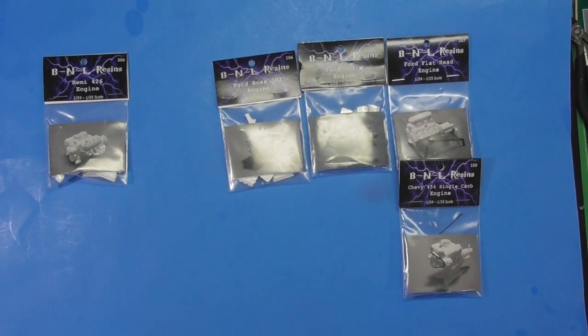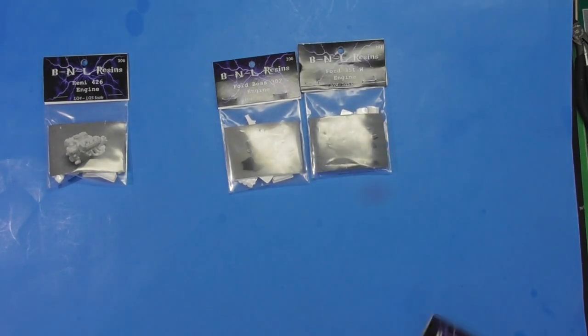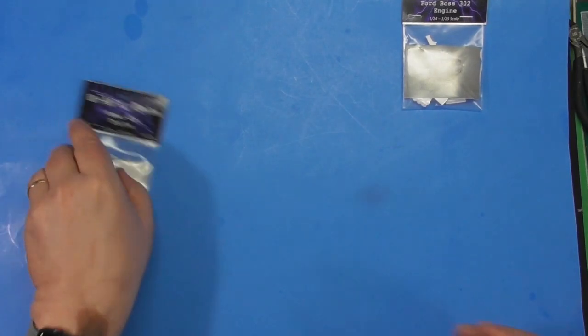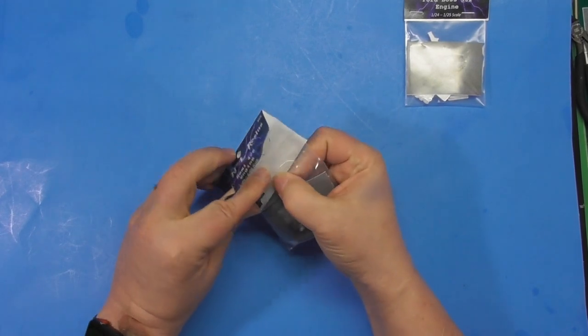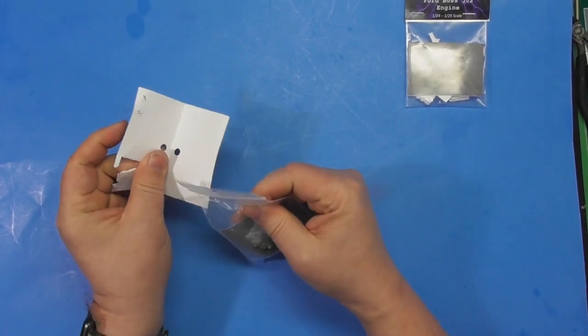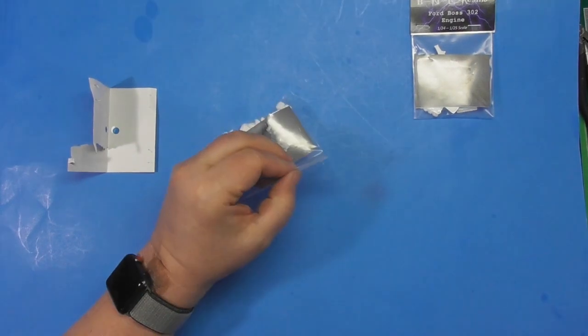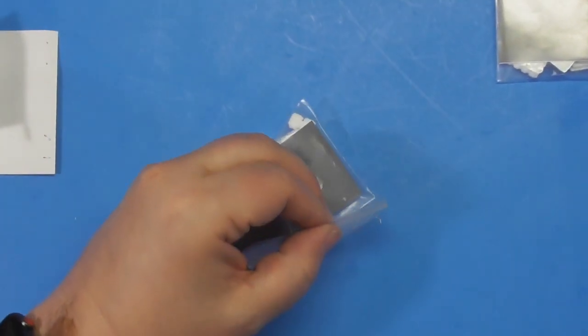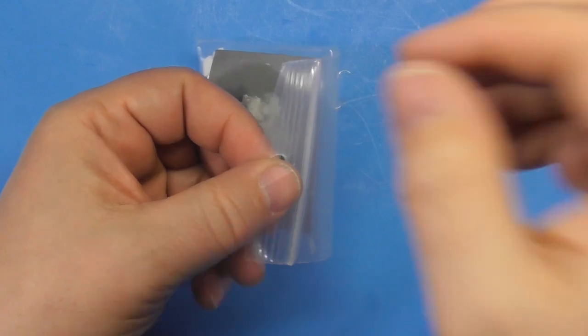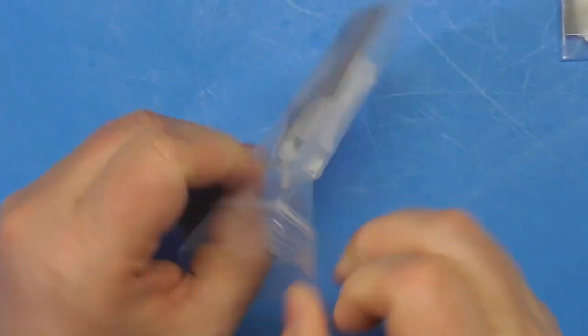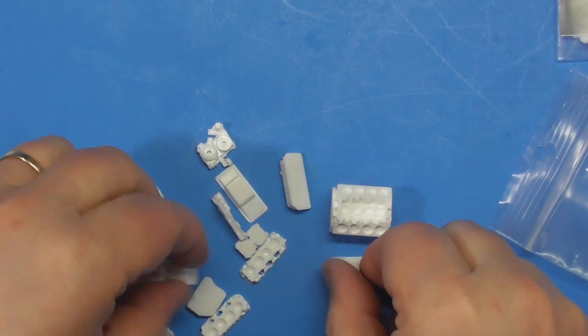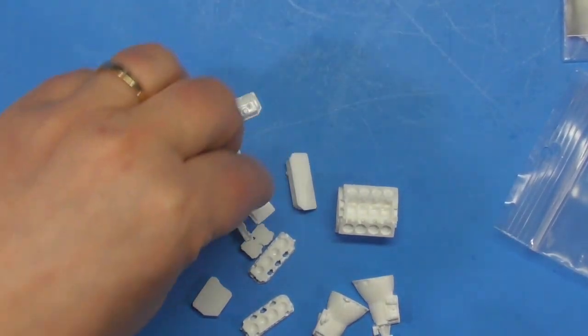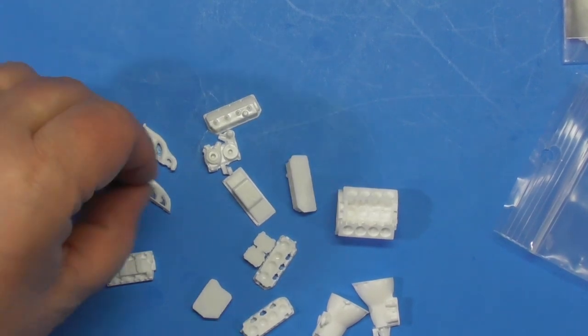Let's open up the Hemi and the 302 Boss. Start with the Hemi. Hemis are really popular right now. You get these nice ziplock bags. You can actually see some detail. This isn't your regular gray type of resin, this is a white resin.